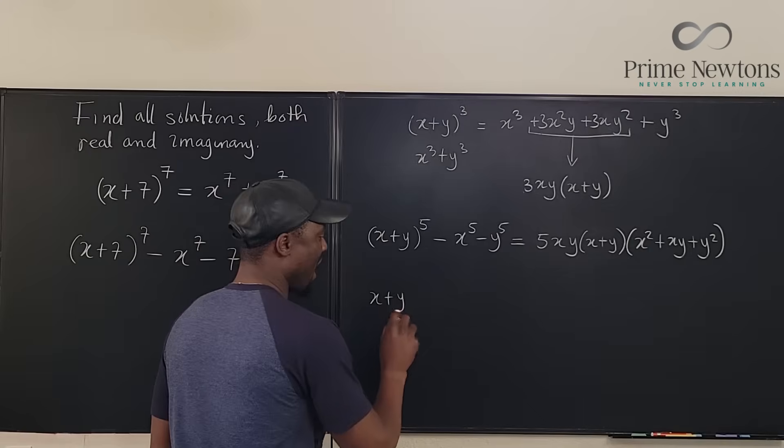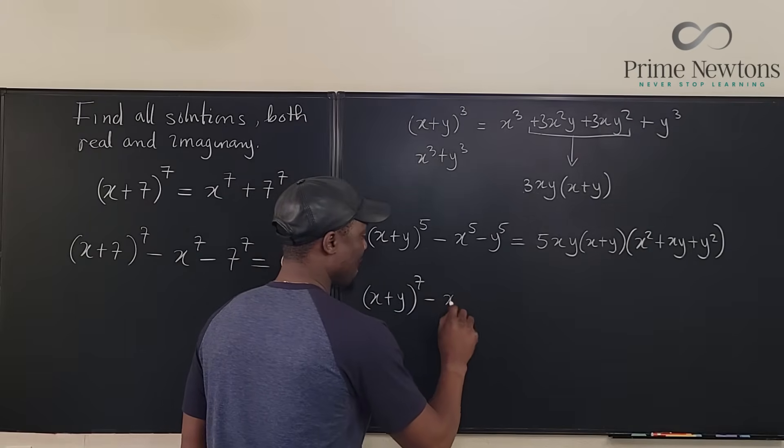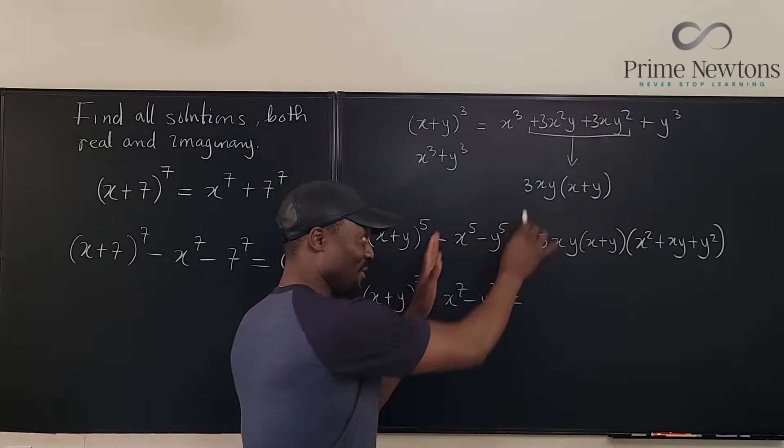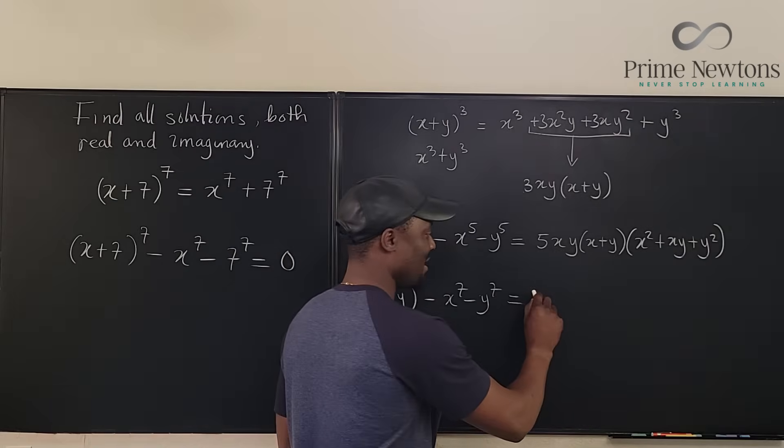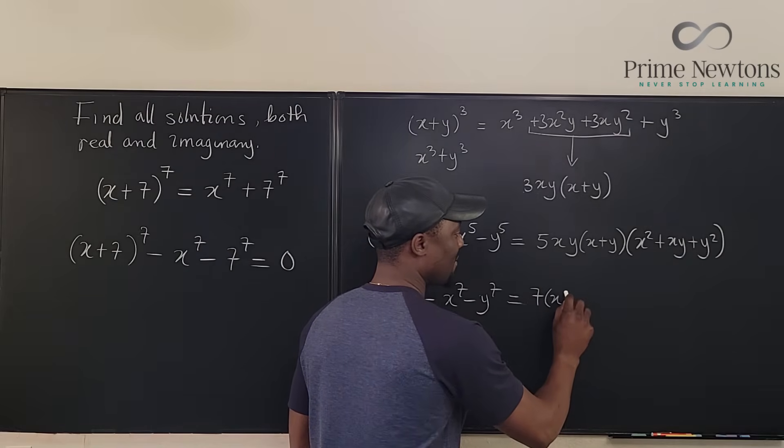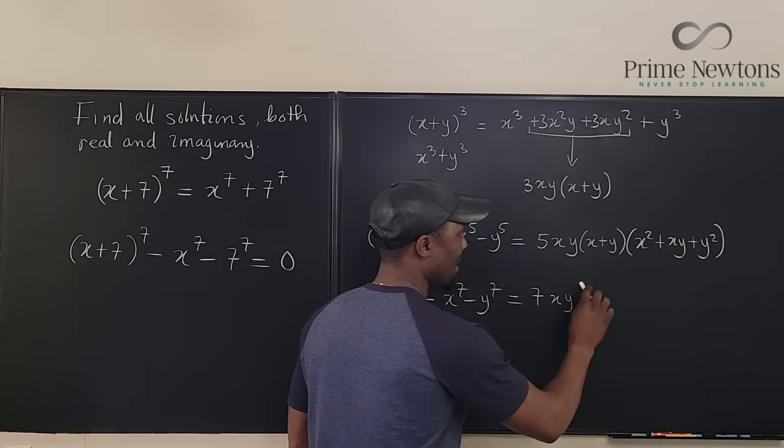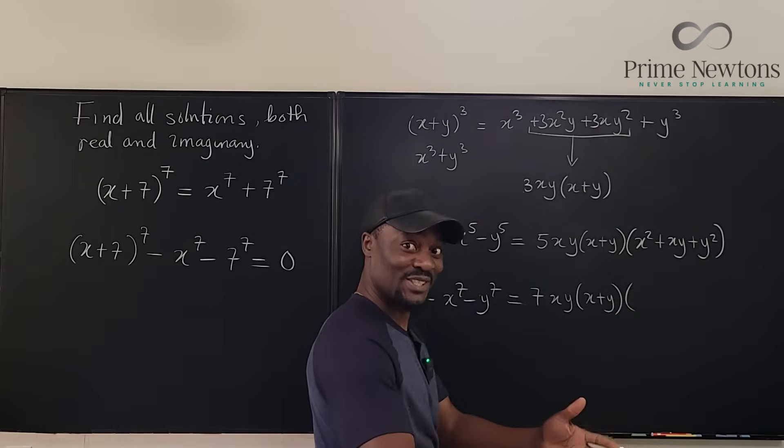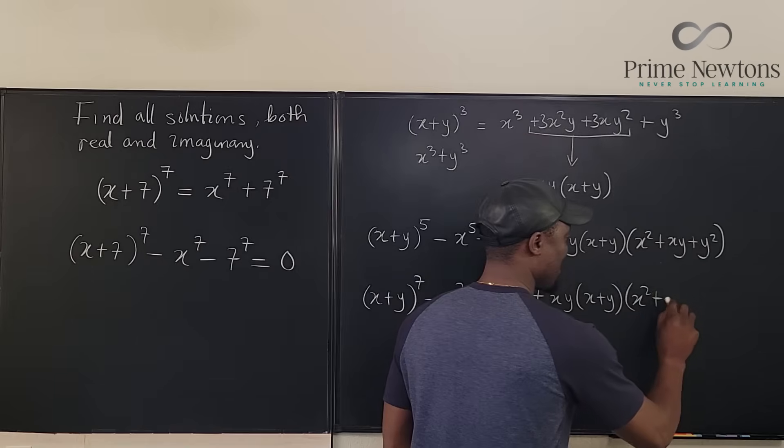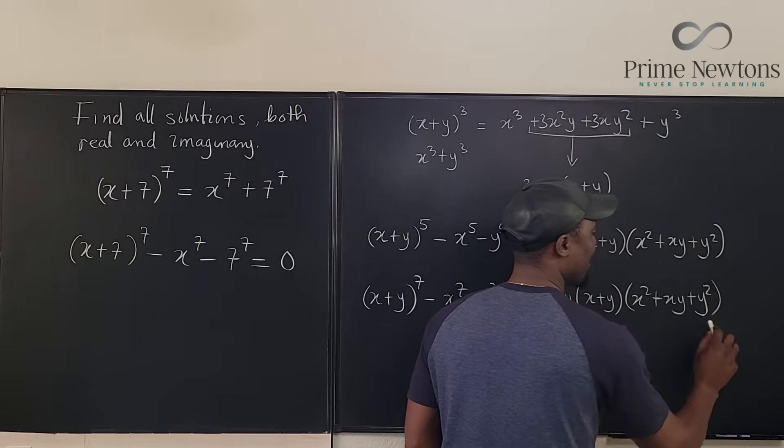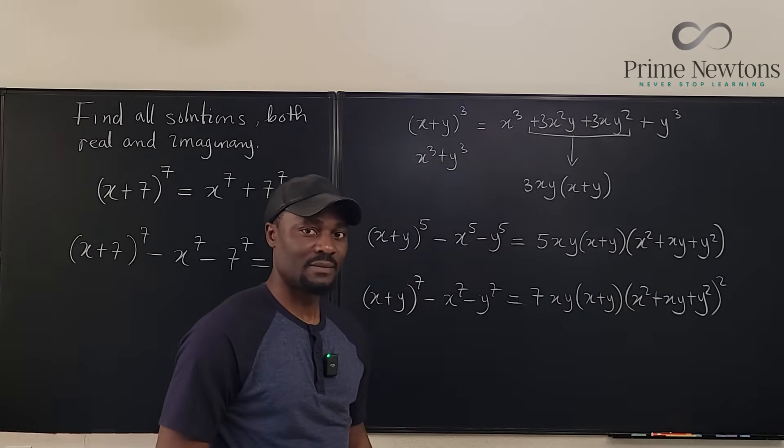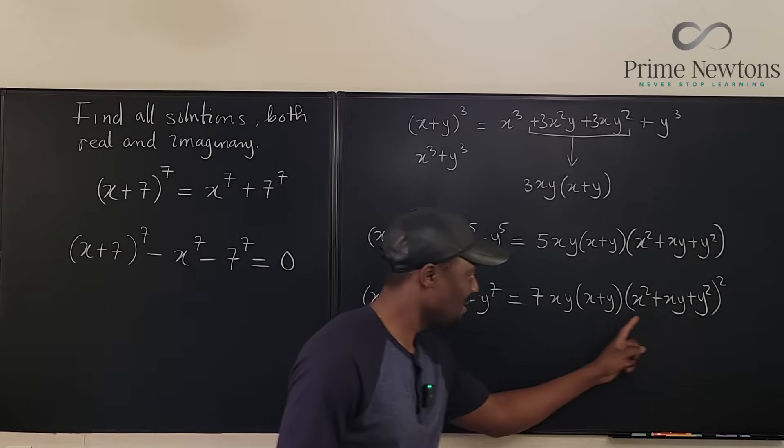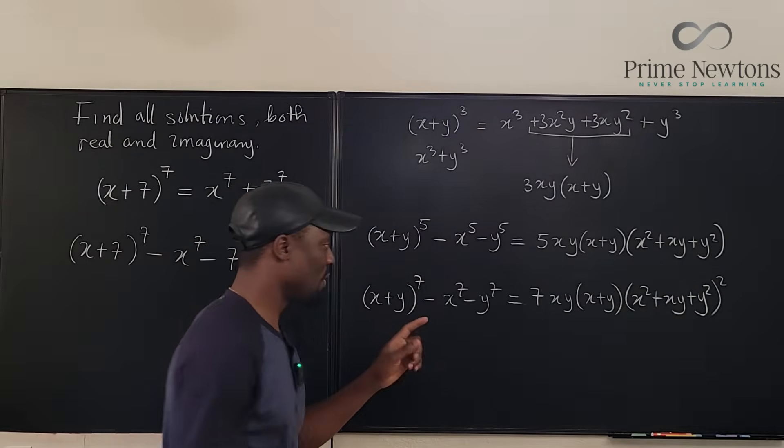What if we do (X + Y)^7 - X^7 - Y^7? What are you going to get? You're going to get something similar. You can always predict it. It's going to be 7XY times (X + Y) times X^2 + XY + Y^2, but you're going to have this one squared. This is what we need. So this is what comes out of this difference.